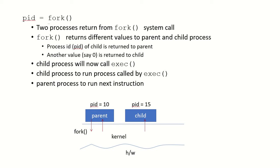Suppose there is a command in the parent process calling fork. This fork system call returns an integer of process ID type. Each process has a process ID — let's call it PID. Whenever the parent gives the fork system call, two processes return from the fork system call: one return value is sent to the parent and another value is returned to the newly created child process.